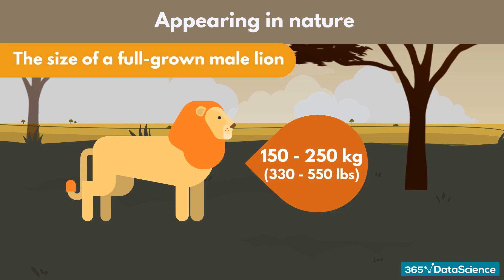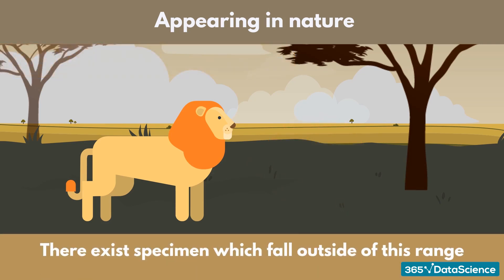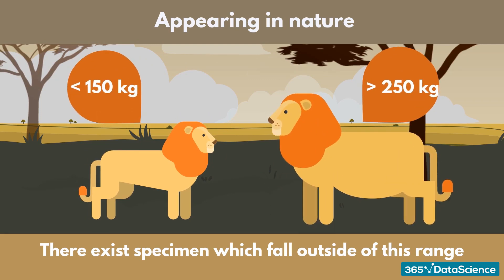Of course, specimens exist which fall outside of this range. However, lions weighing less than 150 or more than 250 kilograms tend to be the exception rather than the rule. Such individuals serve as outliers in our set, and the more data we gather, the lower part of the data they represent.